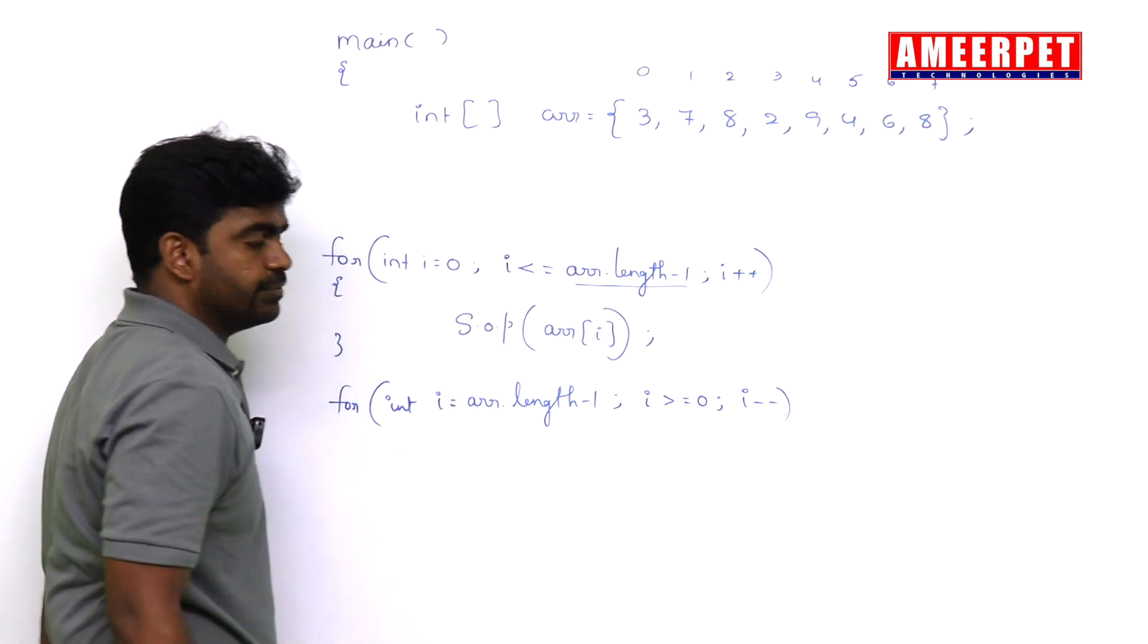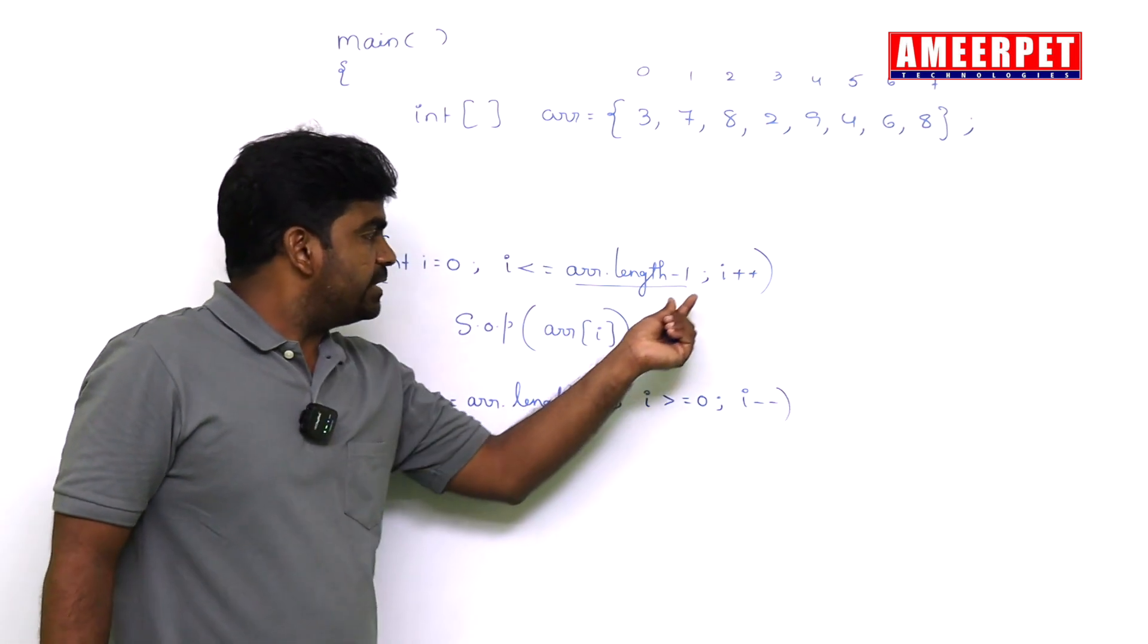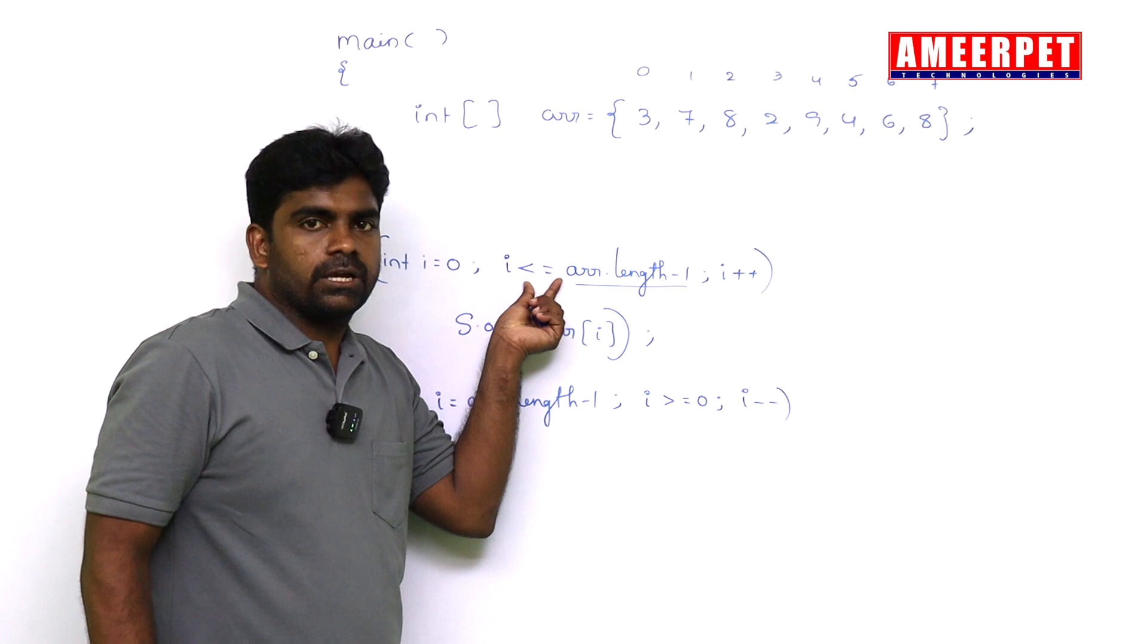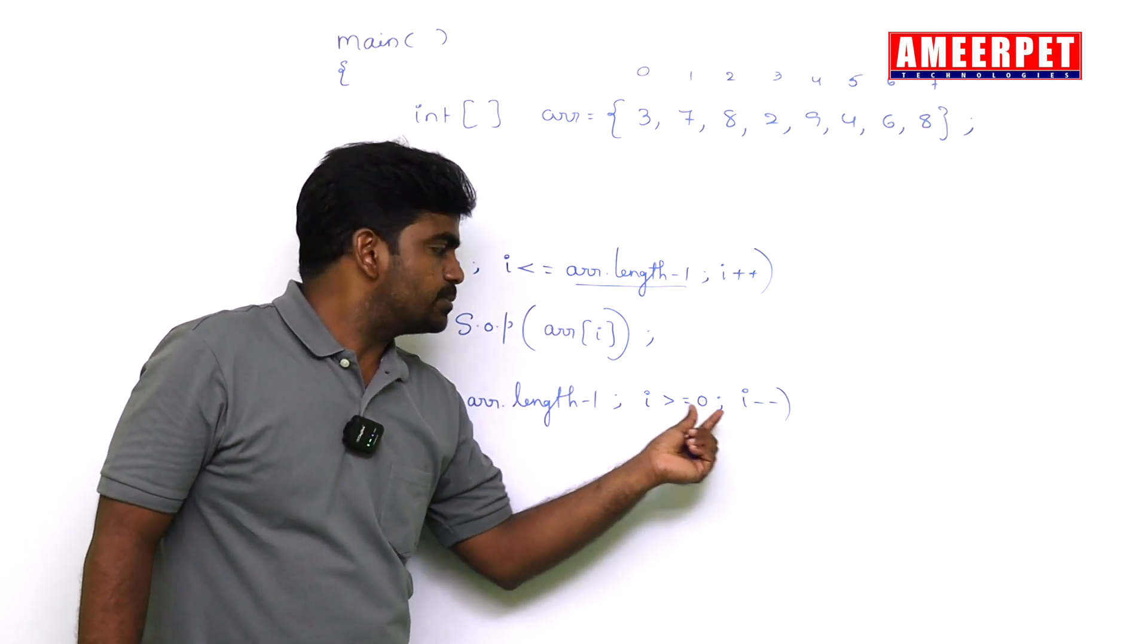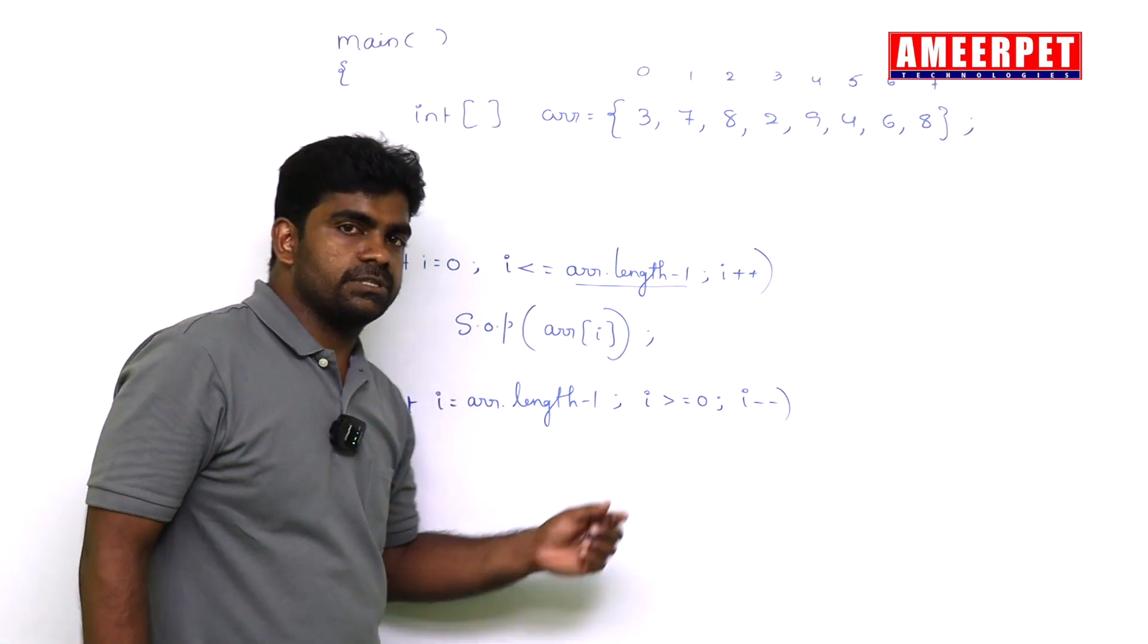i minus minus. We already discussed if it is increasing order, it's less than or equal to in for loops. If it is i minus minus, it's greater than or equals to zero.